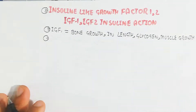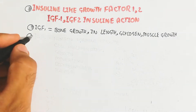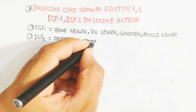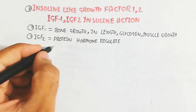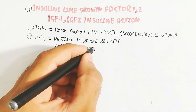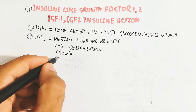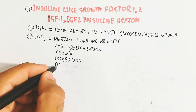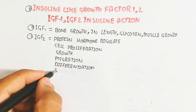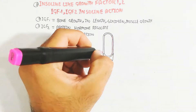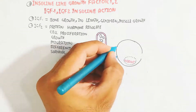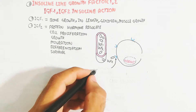Insulin works for development but not for the length of the bone. IGF-2 is a protein hormone that regulates cell proliferation, growth, migration, differentiation, and survival of the cell.